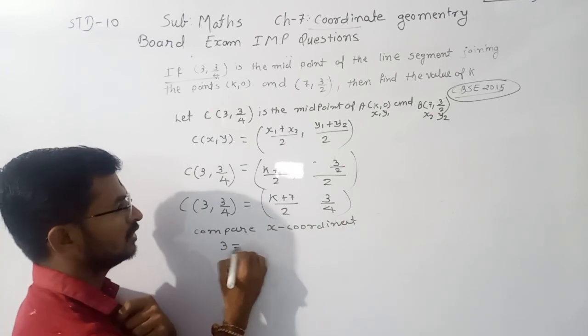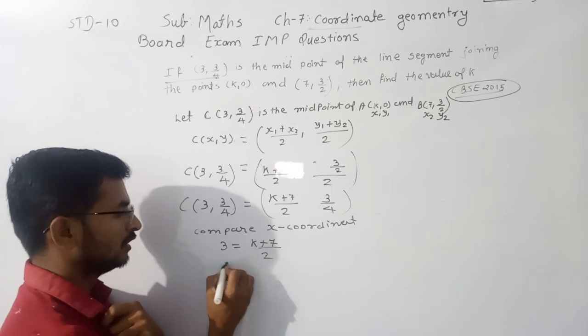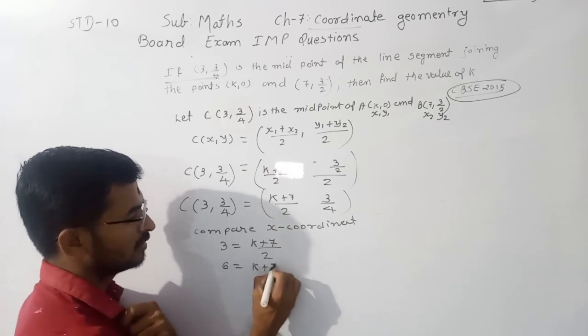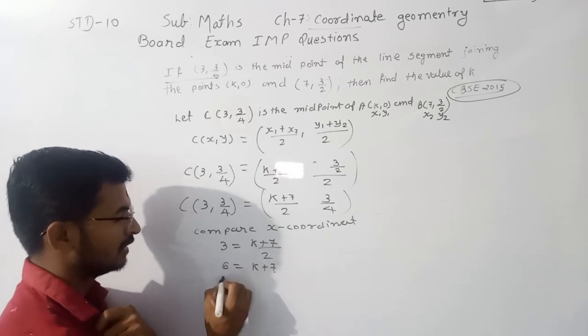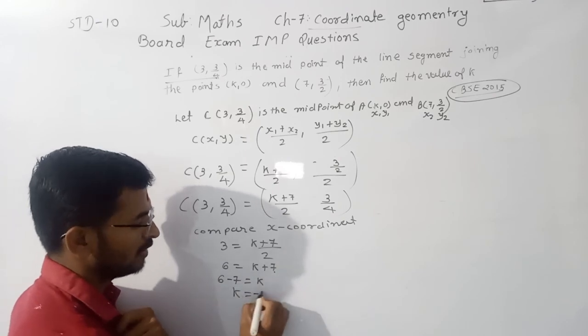Now 2 goes to the left side, 3×2=6 is equal to K+7. 7 goes to the left side, 6-7 is equal to K, and K is equal to -1.